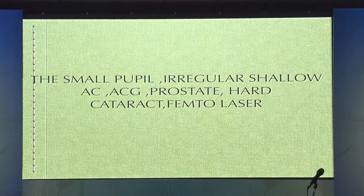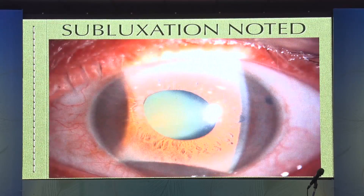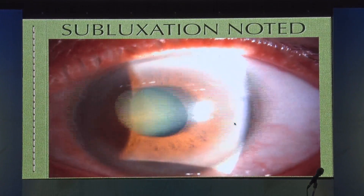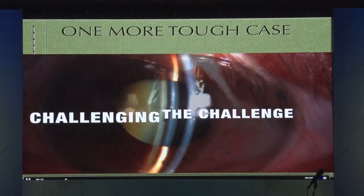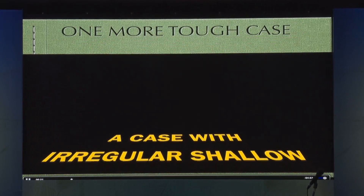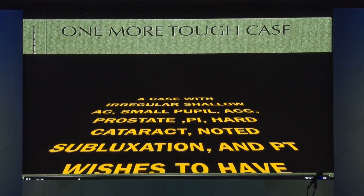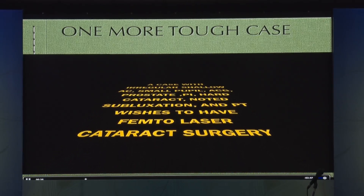The last case is a very challenging one — small pupil, irregular anterior chamber, angle closure attack of glaucoma, prostate, heart cataract, subluxation noted, and the patient wishes to have femto. I call it 'challenging the challenge.' You can see the amount of donesis on slit lamp, and this is all the pupil actually dilates. There was a PI done because of the angle closure attack, and sphincter atrophy was noted. So we did try this — this was my first such case, now much better at it.